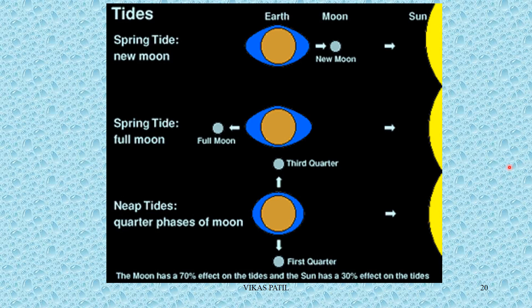Complete picture: on new moon we have spring tide, on full moon we have spring tide, and on the first and third quarter we have neap tides.